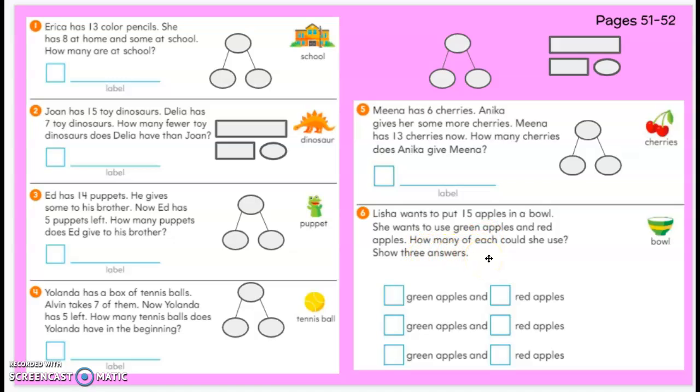In this case, if she's using green and red, none of your combinations can include zero or 15 all of them being one color. So you need to have some green and some red. Then show a different way with some green and some red. And another way with some green and some red apples.